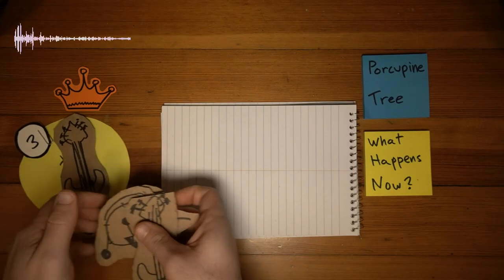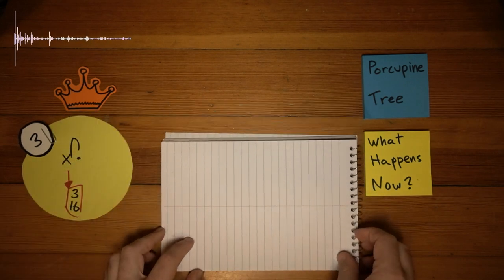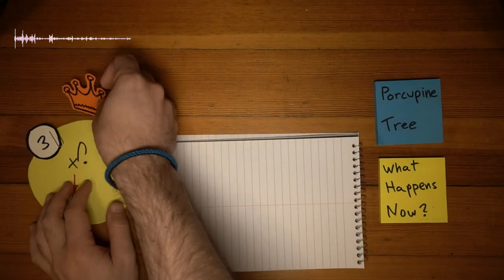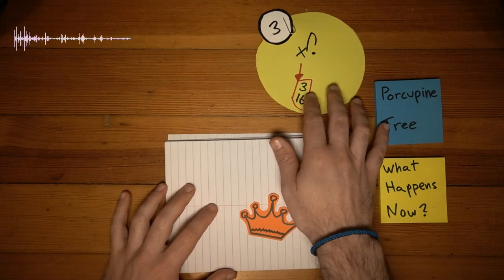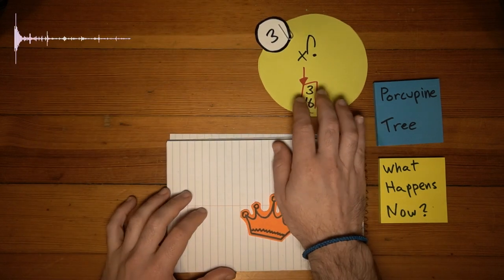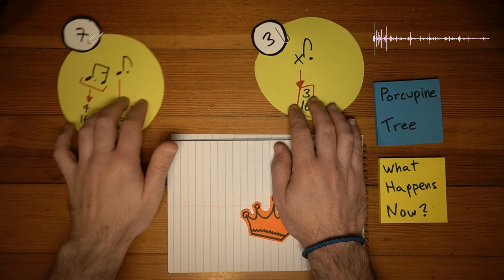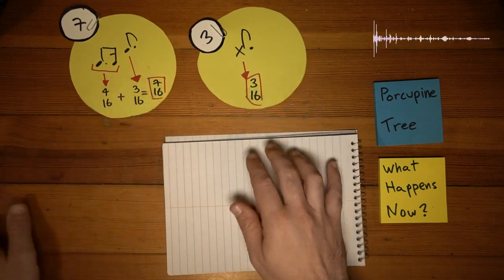So basically, we start in 5-8. Soon after, the drums come in with a 7-16 groove that is topped with a 3-16 ride pattern. Soon enough, the bass joins the 7, the 5-8 disappears, and the 7 becomes the host. The 3 is still hanging in there.